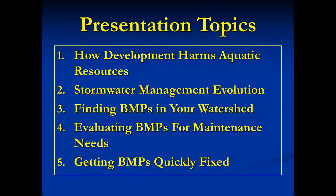There are five topics which make up this presentation. With the knowledge provided by these topics, you can look at a small sampling of stormwater BMPs in your watershed and get a sense of maintenance quality. If you find that all are well maintained, then go on to the next regulated activity. If not, then pursue the suggestions offered here and in the manual for providing local government with the public support essential to improving maintenance.